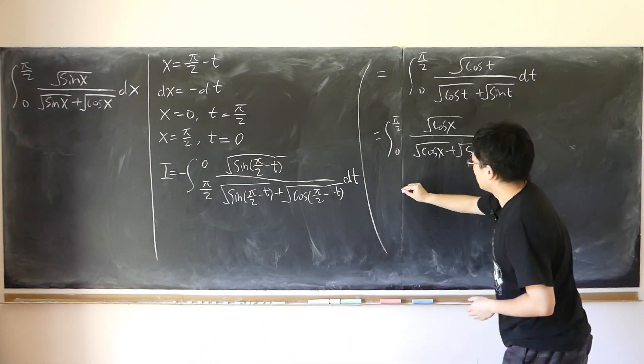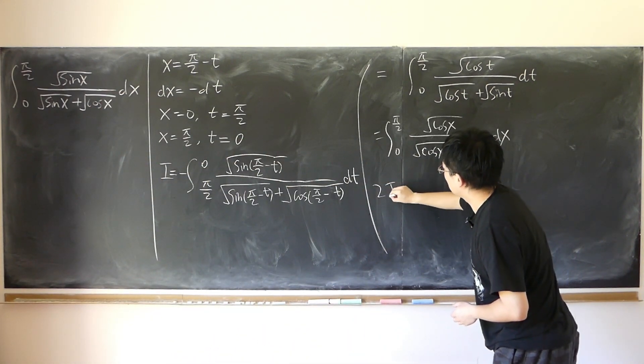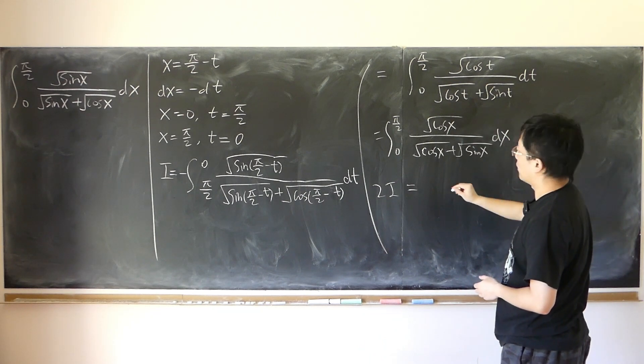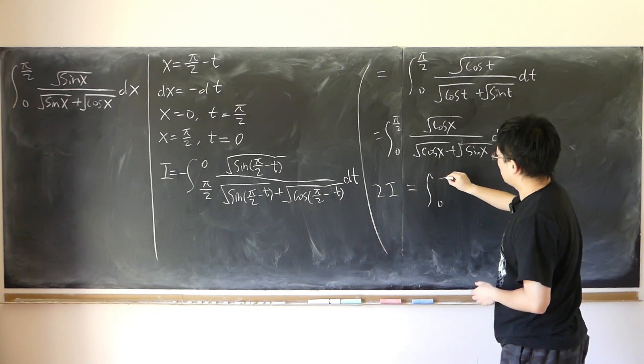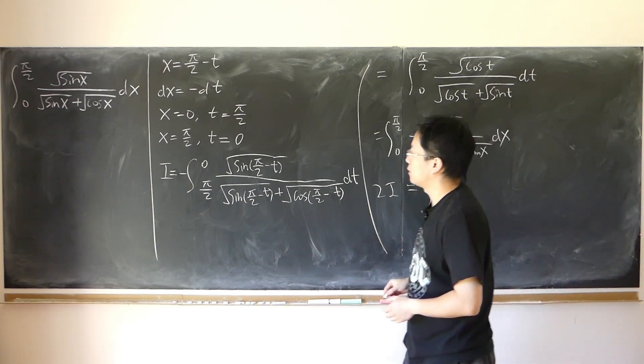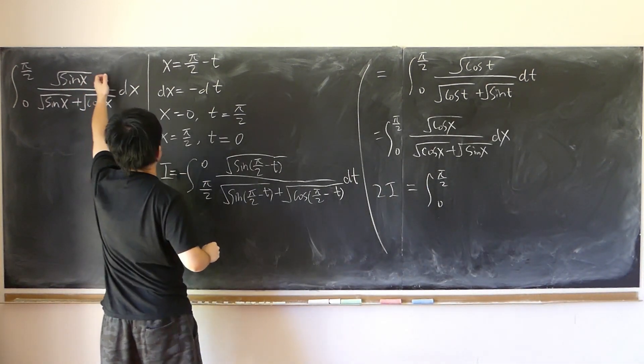So if we add them together, twice of I will become the same boundaries. Same boundaries. Just add up the top.